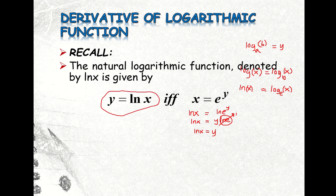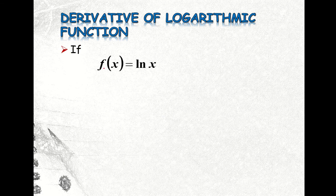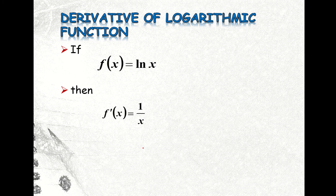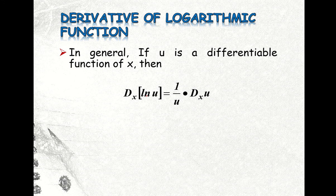Remember this basic concept. If you are given the function f(x) equals LN of X, then the derivative of this function is equal to 1 over X. In general, if U is a differentiable function of X, then we have the formula: the derivative of LN of U with respect to X is equal to 1 over U times the derivative of U with respect to X.